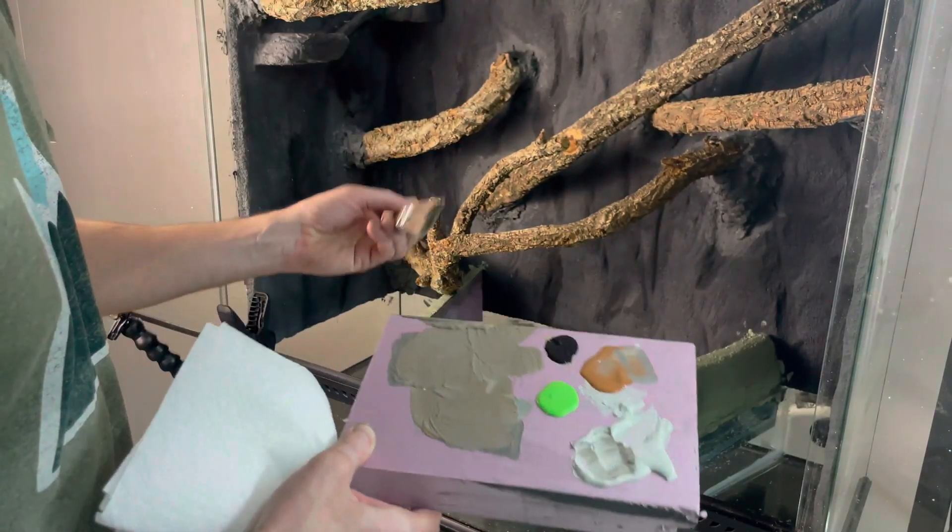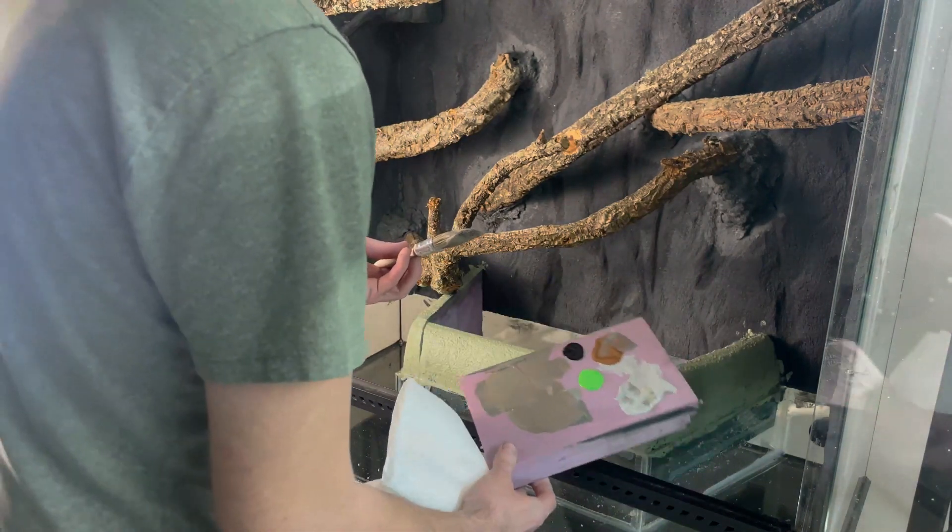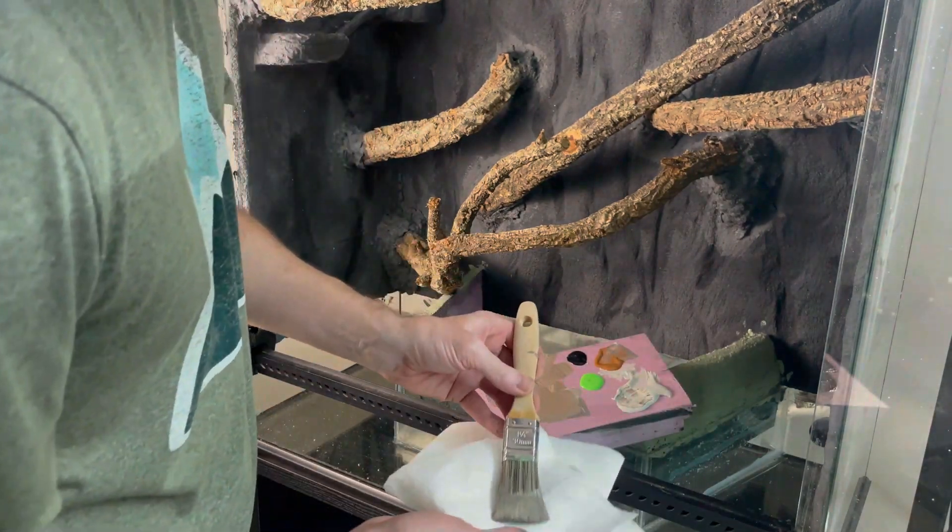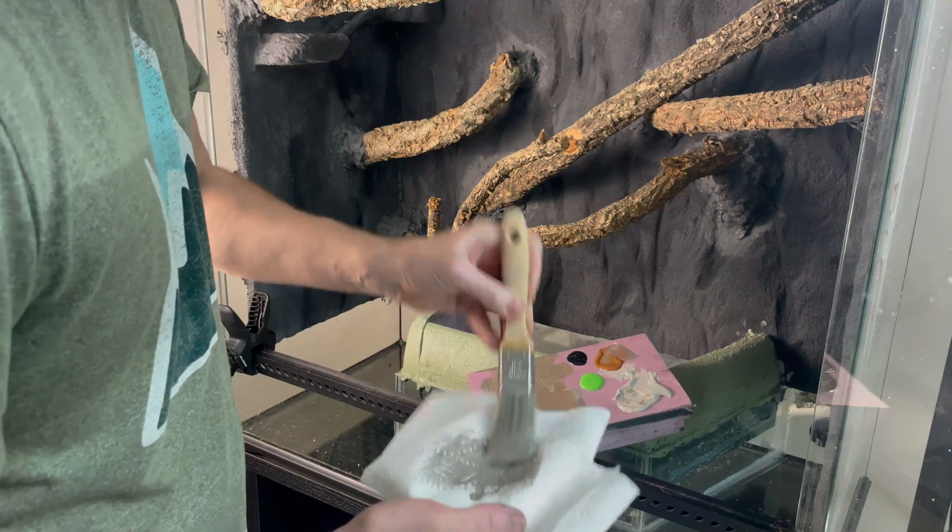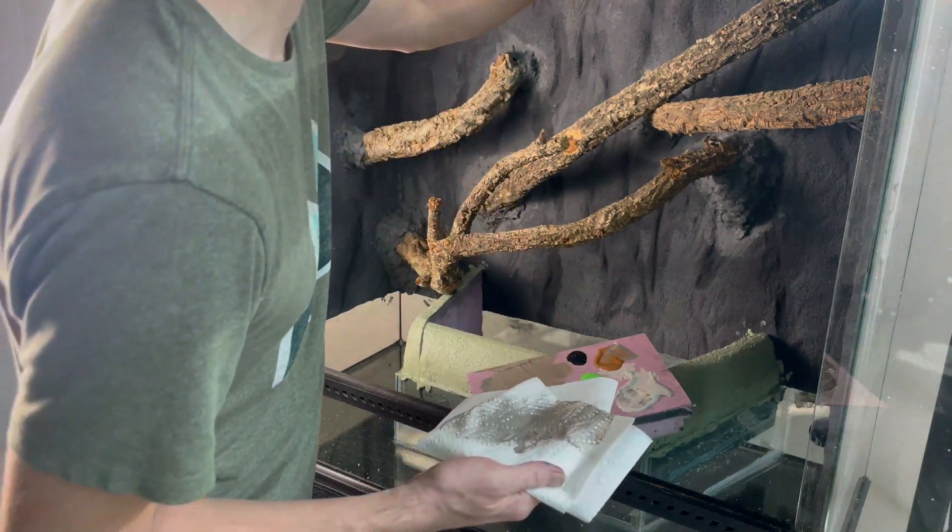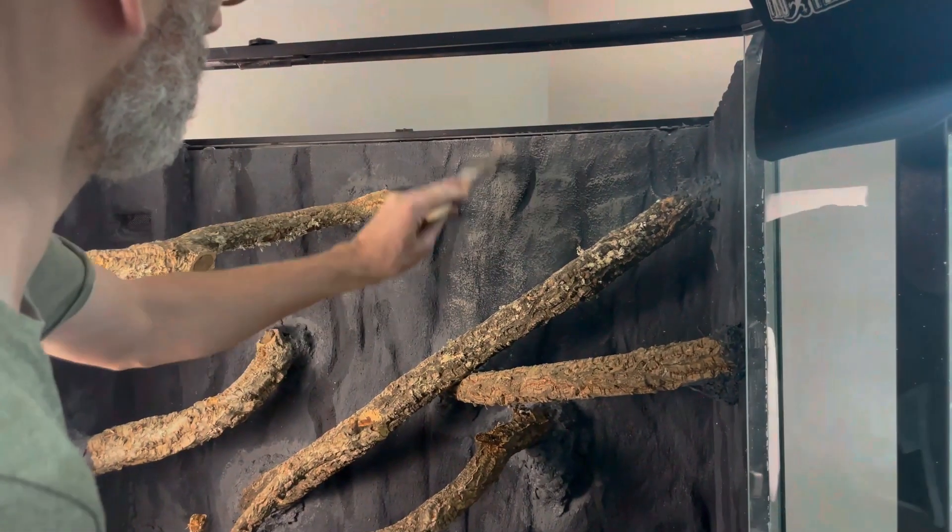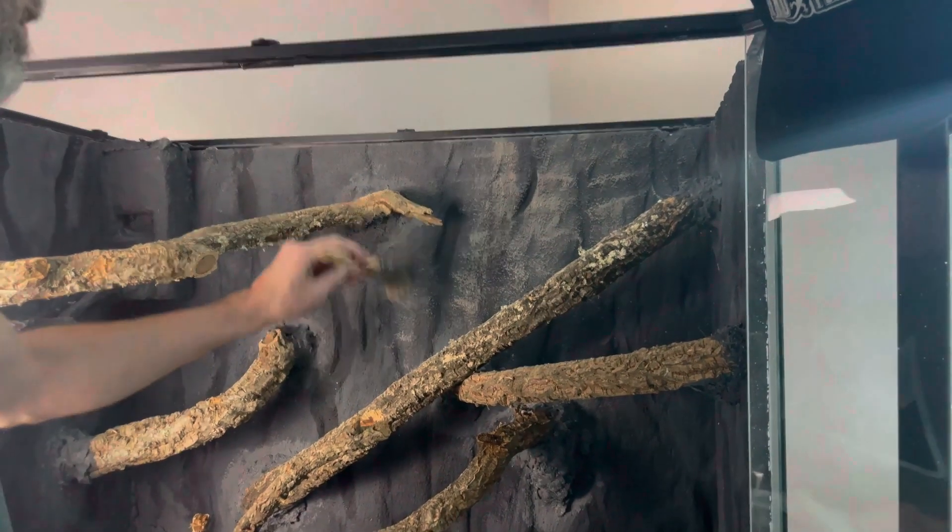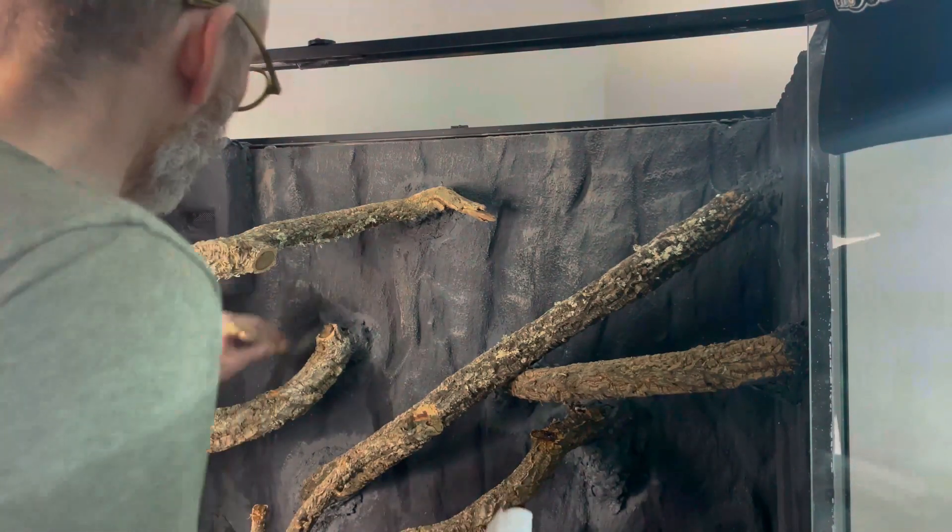Here you can see Greg from Beneath the Canopy Exotics using a method called dry brushing. He adds a bit of colored paint like green and brown to the brush, dries it off with a paper towel, and then paints the background with it. This added even more texture to the background and made it look more natural, almost as if moss was starting to grow on the rock.